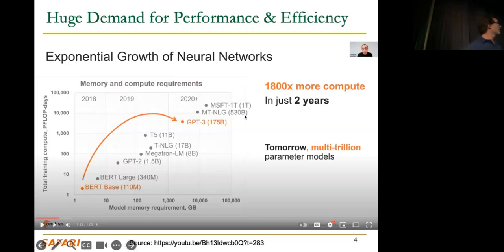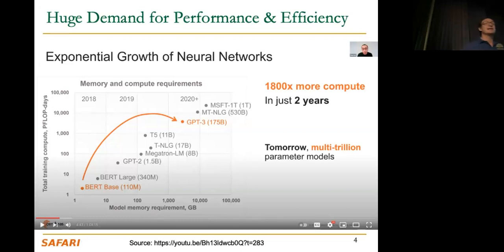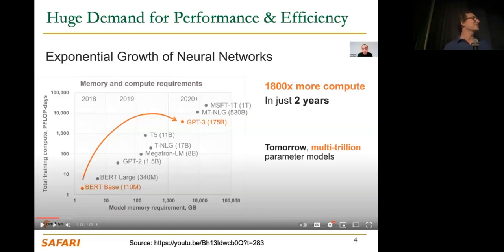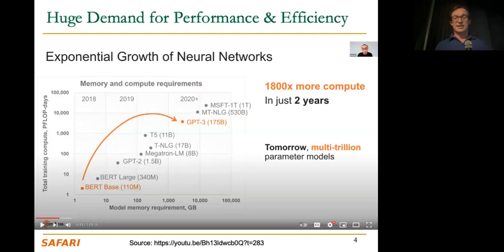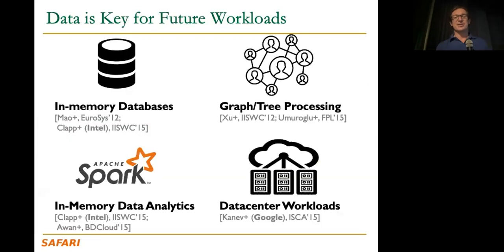Both the compute requirements and the memory requirements of neural networks are growing, and as a result people are looking at different architectures that put computation and memory together. There are many ways of doing near-data computation or memory-centric computation — for example, Cerebras, whose chief architect gave a nice talk. They build huge wafer-scale chips that essentially have lots of SRAM closely coupled to computation units.